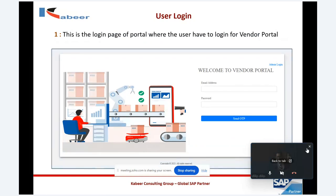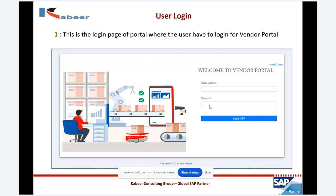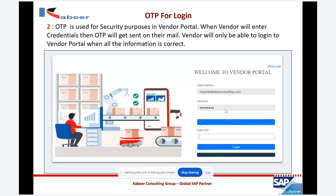This is the login screen. When we log into the SAP vendor self-service portal, for whomsoever you want to give access, they will see this screen where they will have an email address and password. Every vendor and the contact person in the vendor will have access to the vendor self-service portal. We have also created a provision of OTP as well.